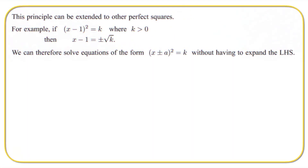Let's look at another example. In principle, we can extend to other perfect squares. For example, if x minus one all squared is equal to k, where k is greater than zero, then x minus one will be equal to plus or minus the square root of k. We can therefore solve equations of the form x plus or minus a, all squared, is equal to k without having to expand the left hand side.